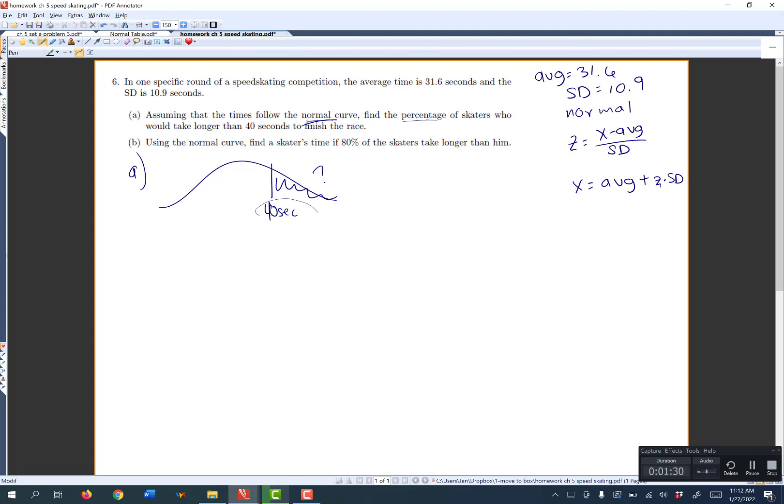Well, in our case, we already know the time is 40 seconds. So we know the x value. So our first step before we can find the percentage is to find the z value. So let's use the formula that gives you a z value. So what we want to know is to find the z.